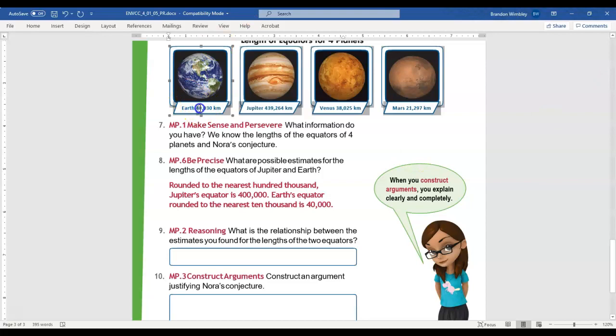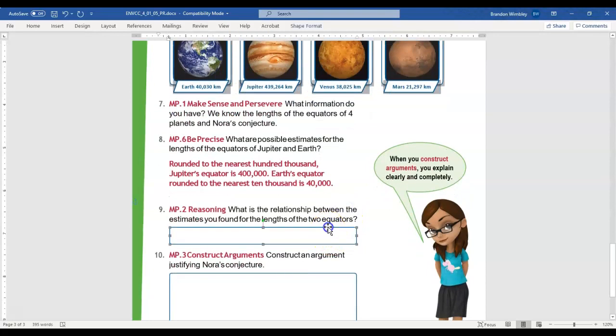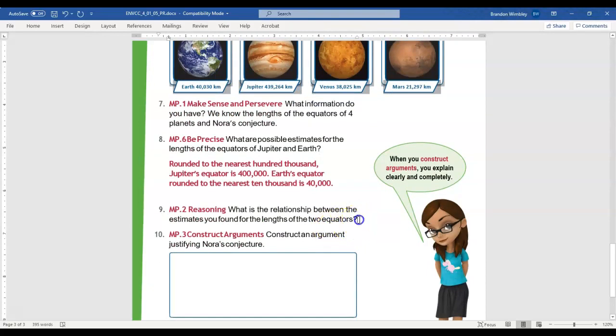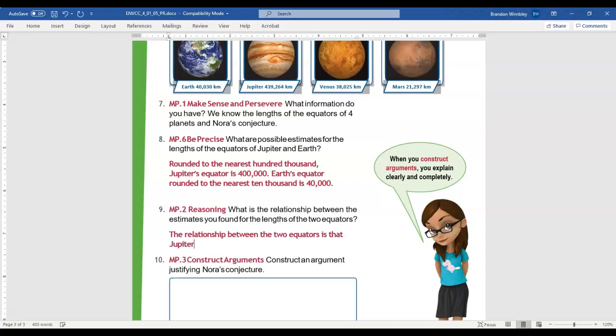Remember, how I got that is, this is my largest place value. So I'm going to round by looking next door. Head zero, make me round down. So now let's head to number nine. What is the relationship between the estimates you found for the lengths of the two equators? Well, looking at it, I see it's been split over one place value, which means it's 10 times as great.